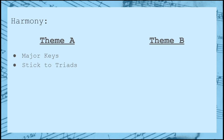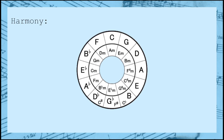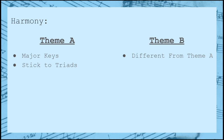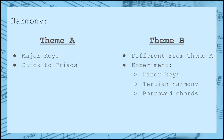Theme B is where things start to get a little more interesting. You have a lot more freedom here. The only real guideline is that it must be in a different key from theme A. The safest option is to just move to the next key over in the circle of fifths. For example, our theme A was in C major, so theme B just moved one to the left to be in F major. You are encouraged to try different strategies — maybe writing in a minor key, using tertian harmony, or borrowing chords from the parallel modes.